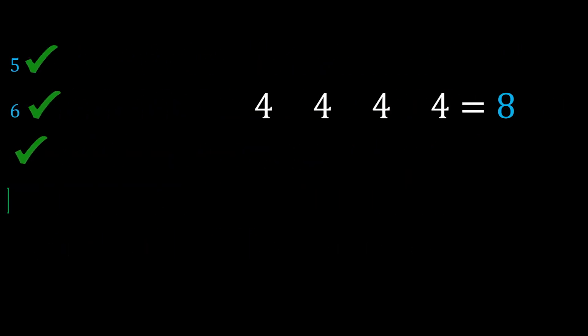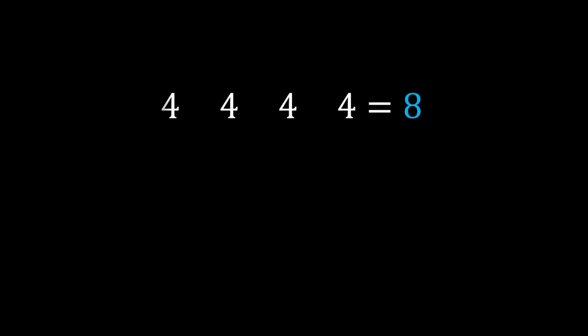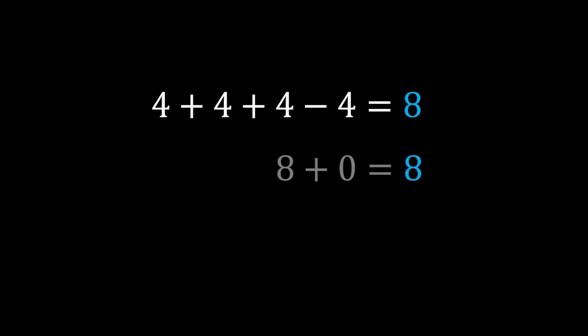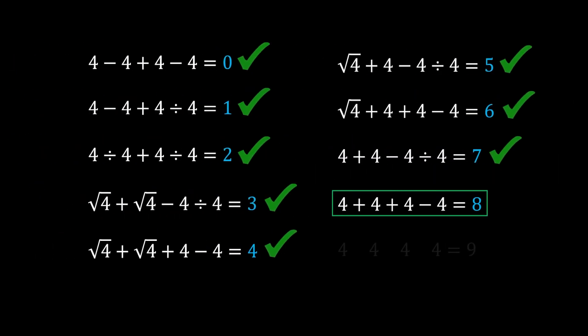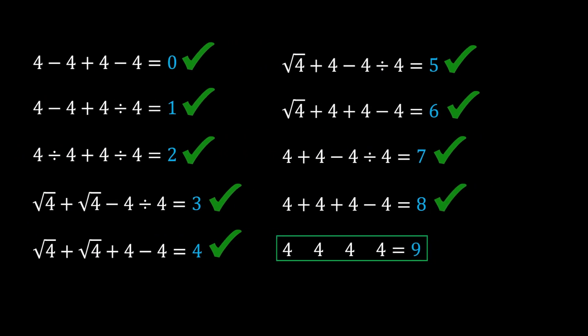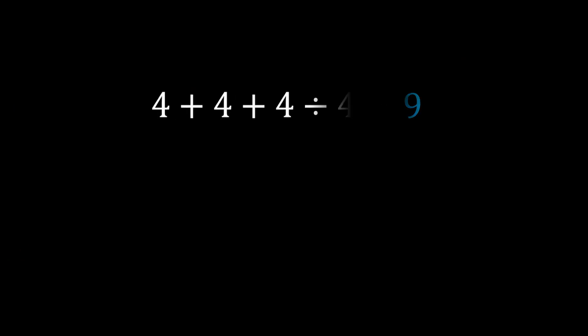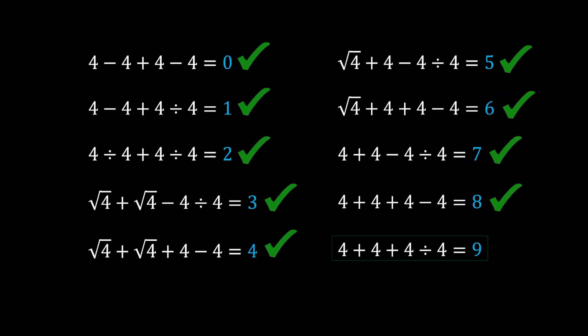Number 8 is pretty simple: 4 + 4 + 4 − 4. Here 4 + 4 = 8 and 4 − 4 cancels, giving 8. The last single-digit number, 9: 4 + 4 + 4 ÷ 4, which is 8 + 1 = 9. Those are our first ten digits.